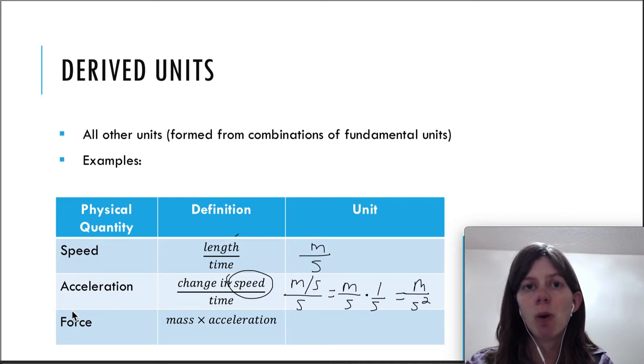Finally, force has a definition of mass times acceleration. We can use the units that we already know. Mass is kilograms and acceleration we just found was meters per second squared. So this is the unit for force. But actually we use a Newton after Sir Isaac Newton because he did so much work in classical mechanics that the unit is named after him.